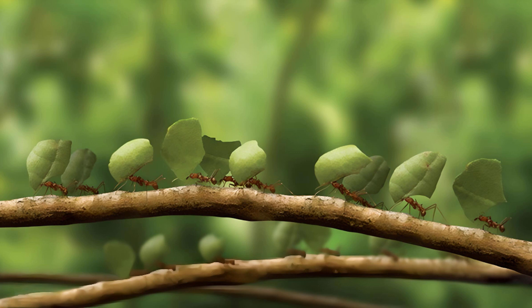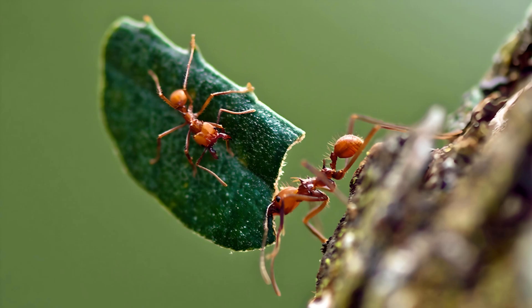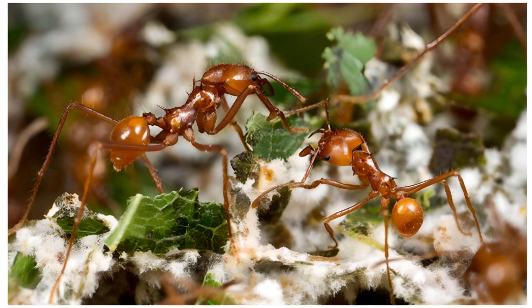Leafcutter ants can carry 20 times their body weight. In their nests, the minim workers cut and chew up the plant material into pulp to serve as the nutritional substrate for their fungal cultivates. The pulp is piled up in underground chambers where the minims form a sponge-like structure full of tunnels. The fungus — for example Leucoagaricus — develops on the rotting plant mush, and the minims tirelessly control the fungus gardens.